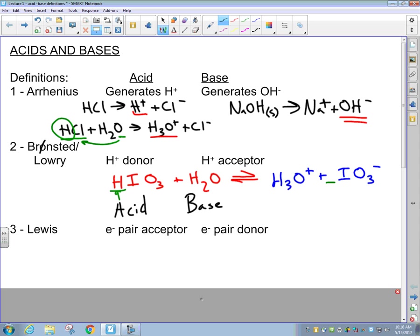The third definition, also in 1923, a gentleman by the name of Lewis, and that name should ring a bell from first semester chemistry with Lewis dot structures. Lewis was focused on electron pairs and how electrons are moving within a chemical reaction.